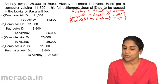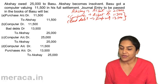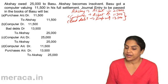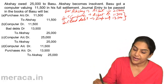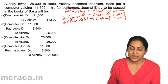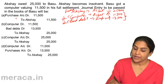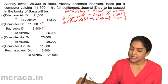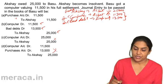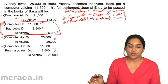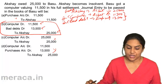So the entry is: increase in asset — debit; increase in expense — debit. Computer account debit 11,500. Bad debt debit 13,500. Akshay account — asset comes down — credit 25,000. The correct answer is Option B: Computer account debit 11,500, Bad debt debit 13,500, to Akshay 25,000. There is no purchase involved, so Option B is correct.